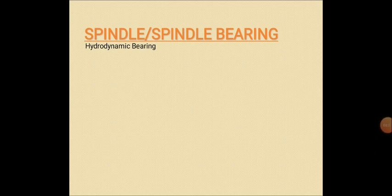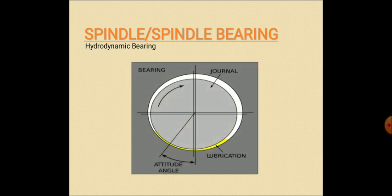Next is the spindle spindle bearing. In that we explain about the hydrodynamic bearing. This is the figure related to the hydrodynamic bearing. In this you can see the bearing, the journal, the lubrication in yellow, then the attitude angle. In hydrodynamic bearing the gap is generated dynamically by the bearing motion. The hydrodynamic bearing are used in rotary applications and may require external pressure on one of the bearing pads or secondary bearing to avoid excess friction when they are starting rotation.